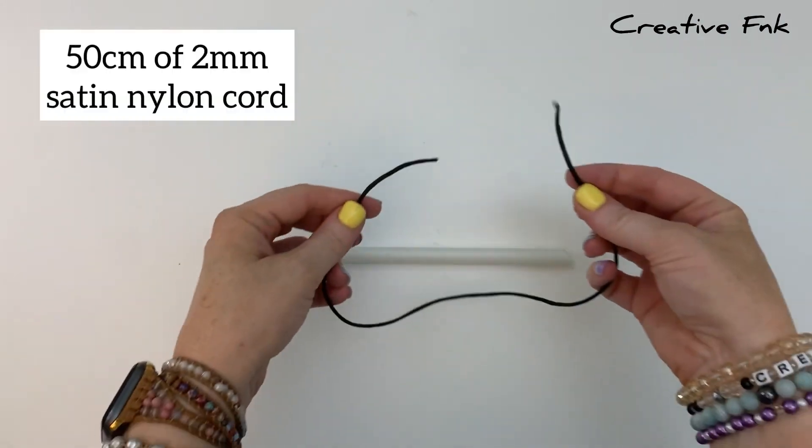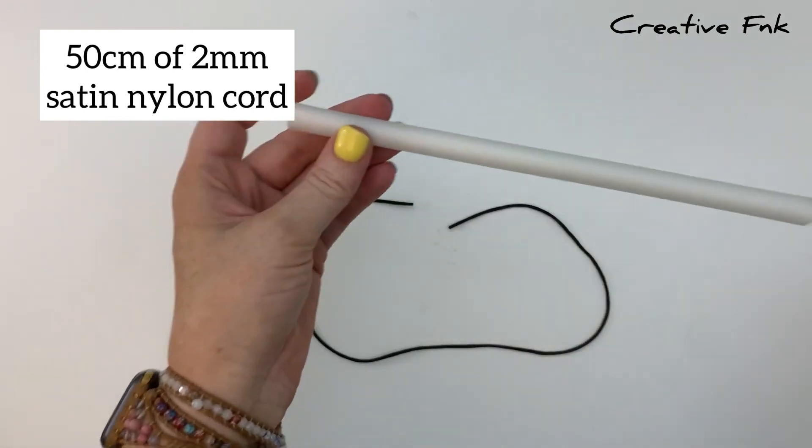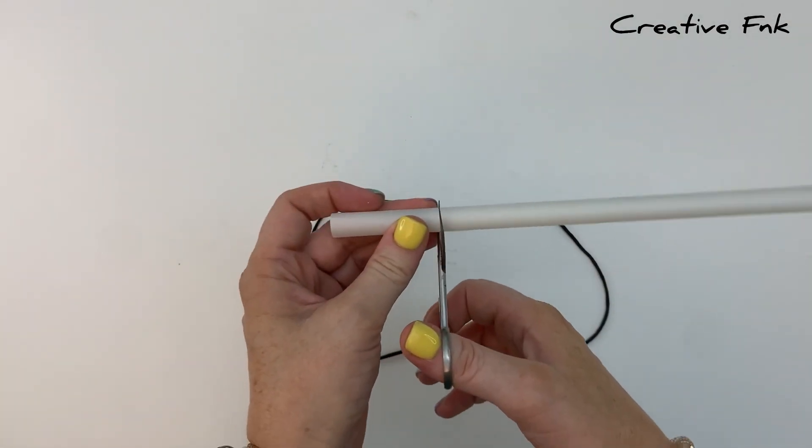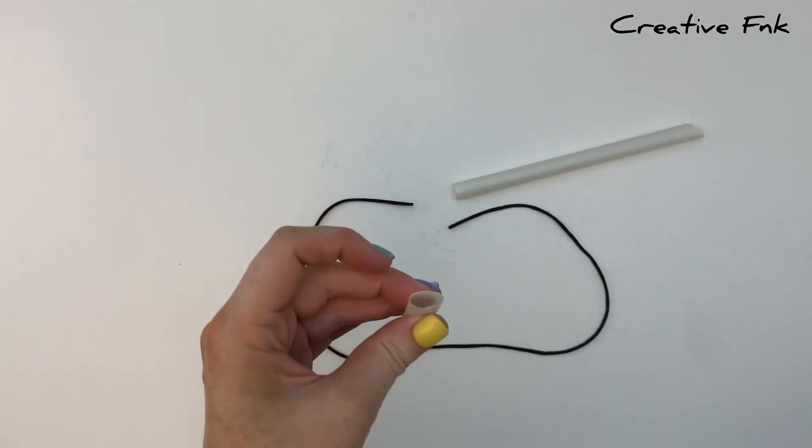For our bracelet today I'm using 50cm of 2mm satin nylon cord. Then we need some sort of tubing that we can use for our barrel knot. I find any paper or plastic drinking straw is fine, this one's from a bubble tea.